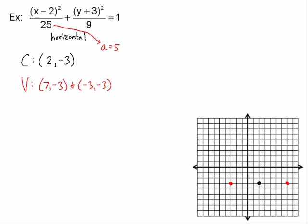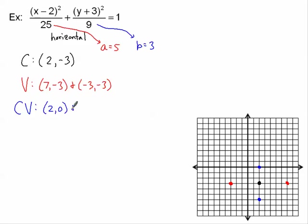For the co-vertices, b is the square root of 9, so b equals 3. Counting 3 units up and down from the center: the co-vertices are (2, 0) and (2, −6).